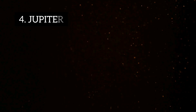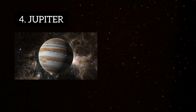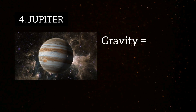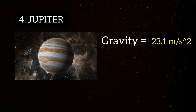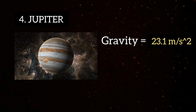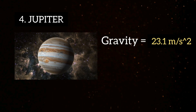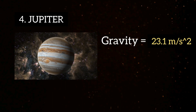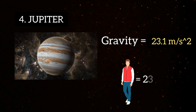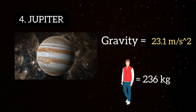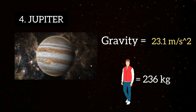Fourth, Jupiter, the largest planet of our solar system, has a gravity of around 23.1 meters per second square, which is almost 2.36 times the Earth. So, the person's weight will be 236 kg on Jupiter, which is almost twice that on Earth.